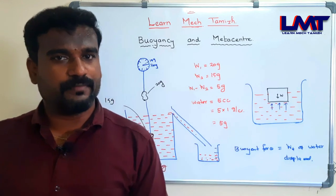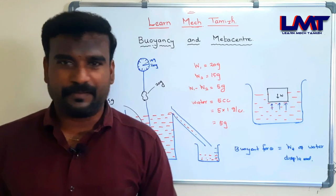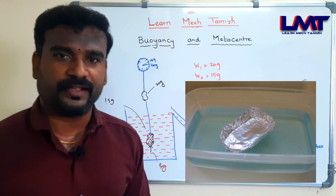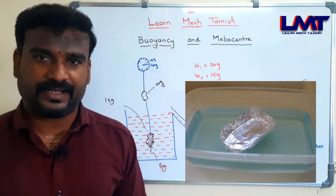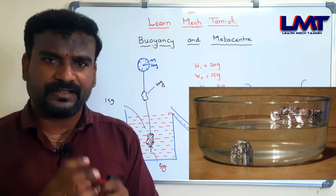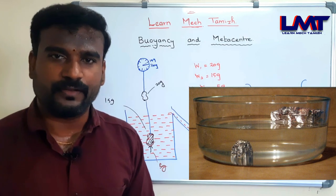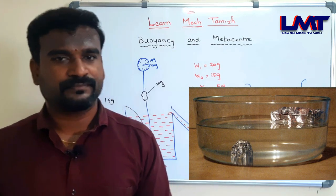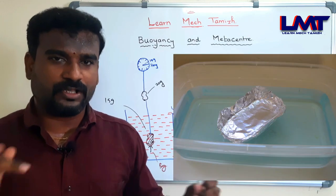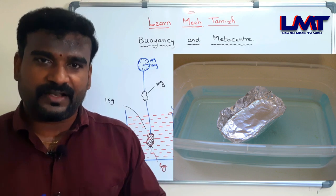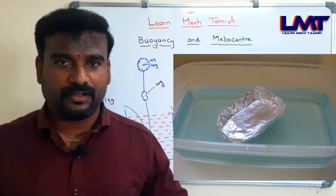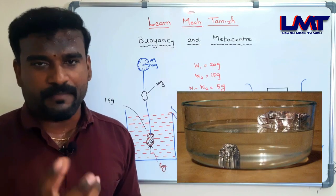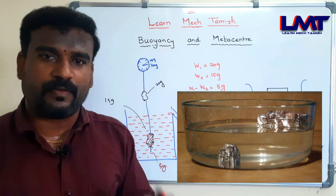For example, you can take a piece of paper and fold it into a cup shape. Put it on water. Because of its shape, it has a large bottom surface area and displaces a volume of water. That displaced water creates a buoyant force. If the buoyant force is greater than the weight of the paper cup, the cup floats.